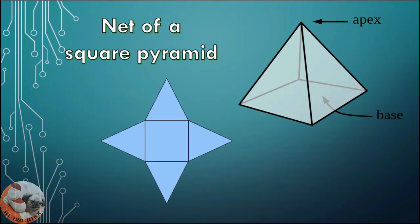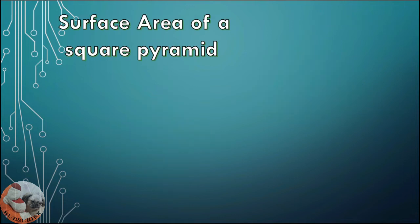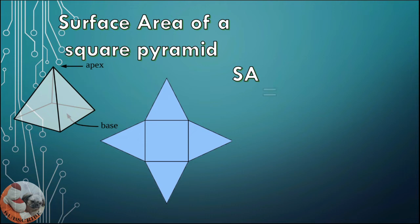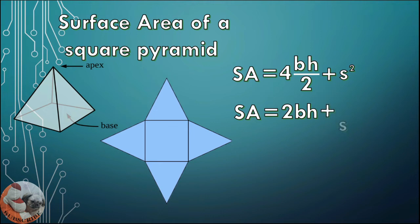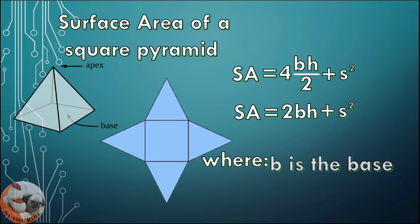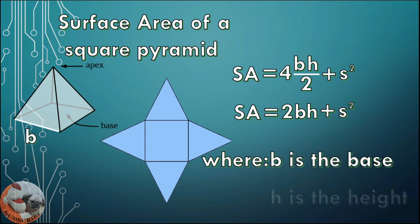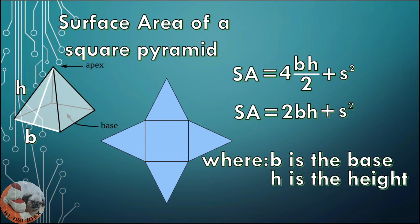This is the net of a square pyramid. It has 4 triangles and a square base. To find the surface area: surface area equals BH divided by 2, multiplied by 4 because it has 4 triangles, plus the area of the base which is S squared. So surface area equals 2BH plus S squared, where B is the base, H is the height, and S is the side of the base.